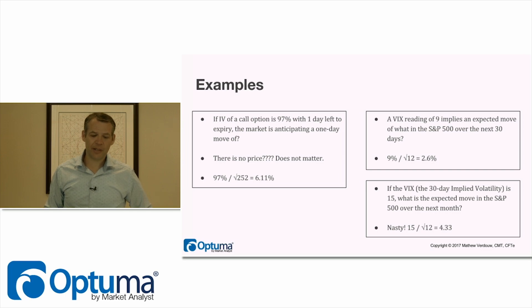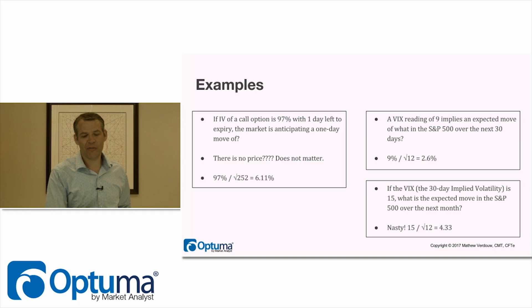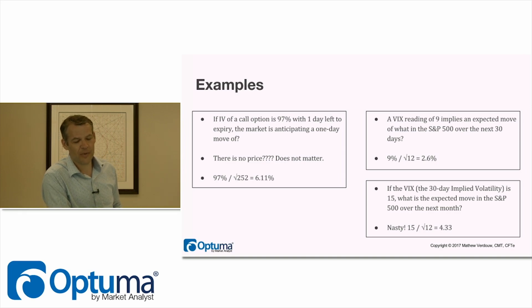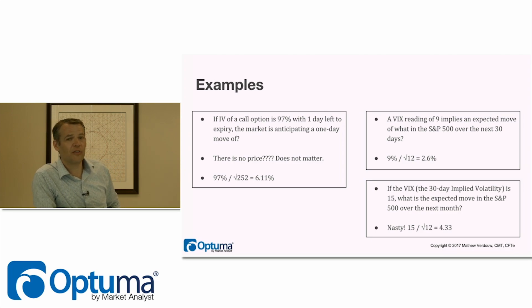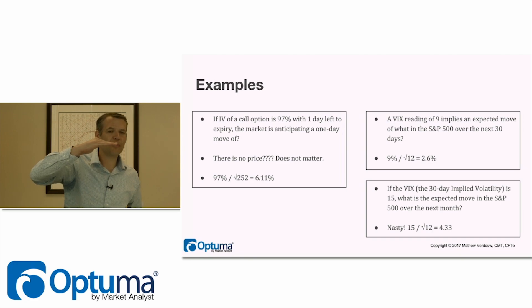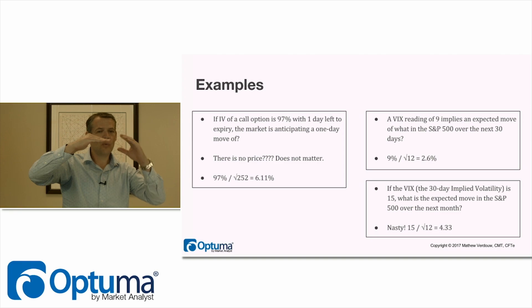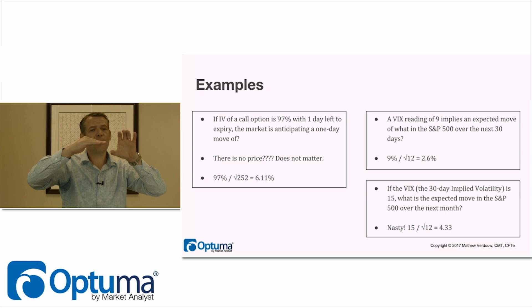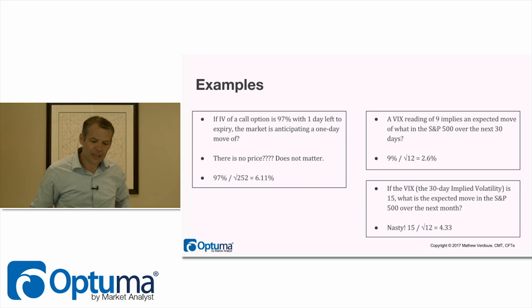Next example: a VIX reading of 9 implies an expected move of what in the S&P 500 over the next 30 days? We take 9% divided by the square root of 12, and that's an expectation of 2.6% over the next 30 days. That 2.6% means we could be 2.6% up or 2.6% down — that is the range we're expecting to be in.